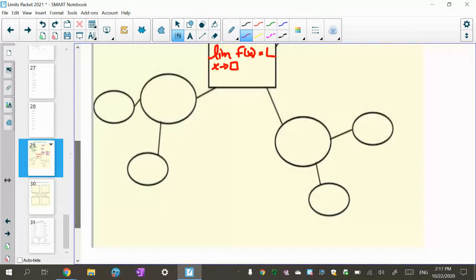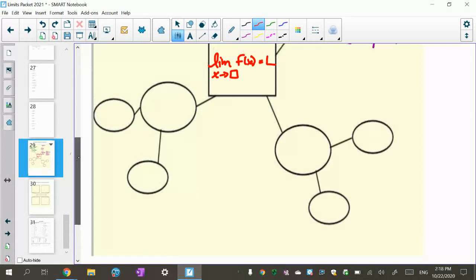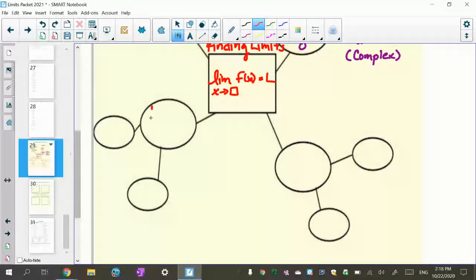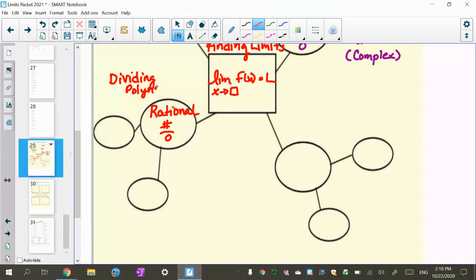So down here on the left, if I get a rational number and I get a number over 0, and remember, a rational number is I'm dividing polynomials. So I just kind of write that down. I have a polynomial over a polynomial. It's nice to have that with you, to remember that. So if I do that, I know it's a vertical asymptote.